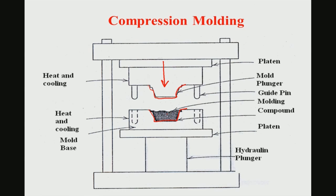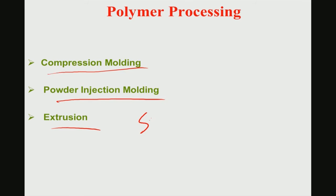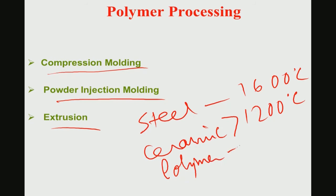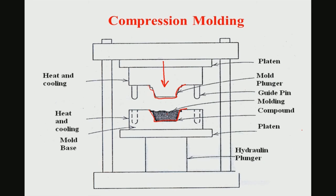For reference, steel is molten at around 1600°C, ceramics are sintered at greater than 1000–1200°C, whereas most polymer processing is done at less than 250°C. This means the heat requirement for polymer processing is considerably lower than for metals or ceramics.